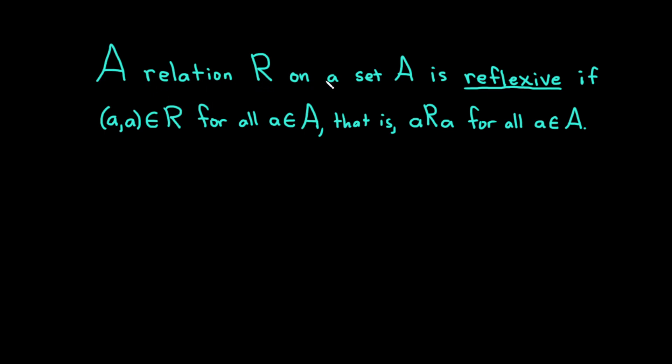A relation R on a set A is reflexive if (a,a) is in R for all a in A. So for every single element in A, the ordered pair (a,a) is in R. In other words, a is related to a for all a in A. So it's reflexive if every element in A is related to itself.